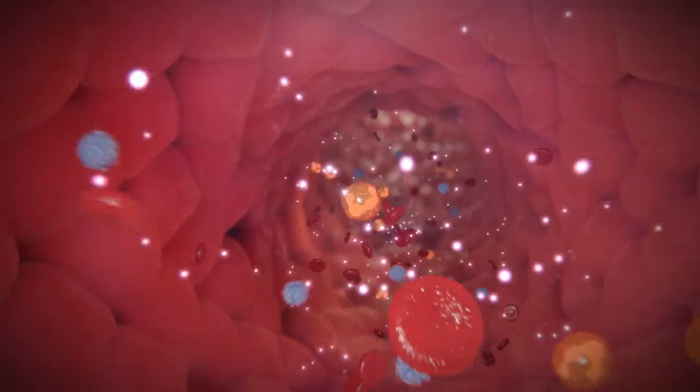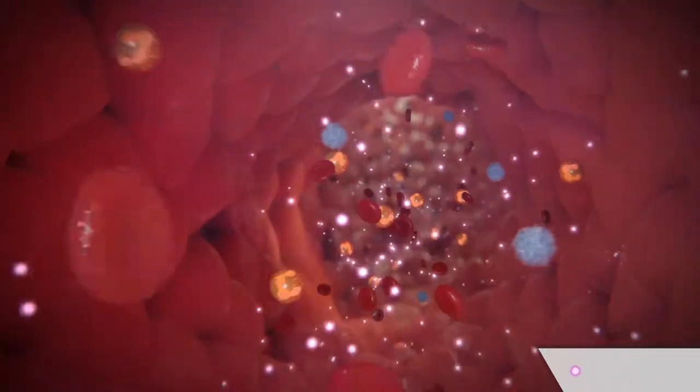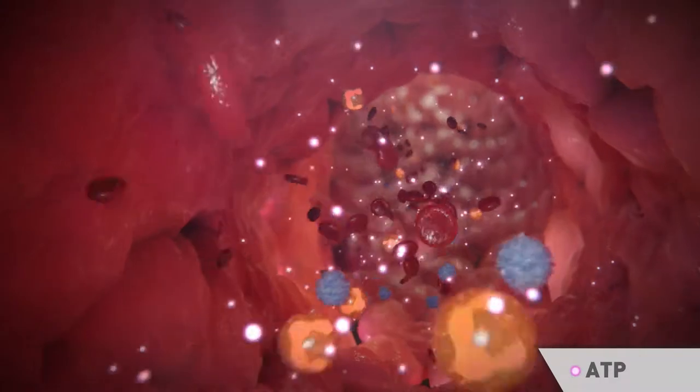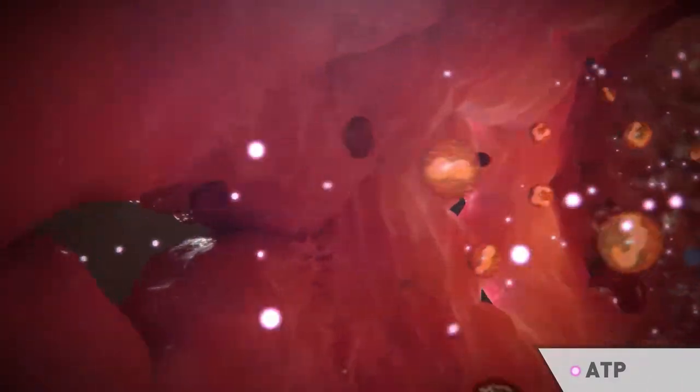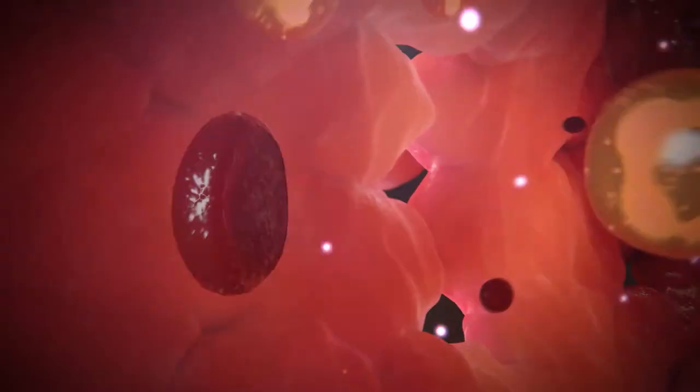Dying cells in hypoxemic organs release excess amounts of pro-inflammatory ATP. Excess ATP leads to a systemic aggravated inflammatory cascade, SIRS, and further damages the endothelial barrier.